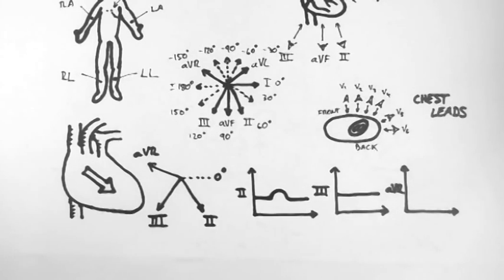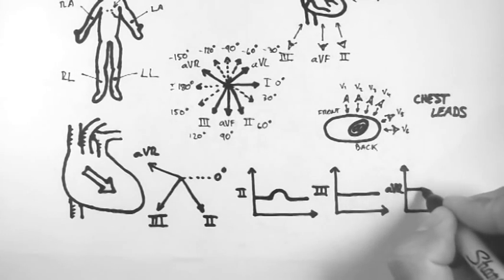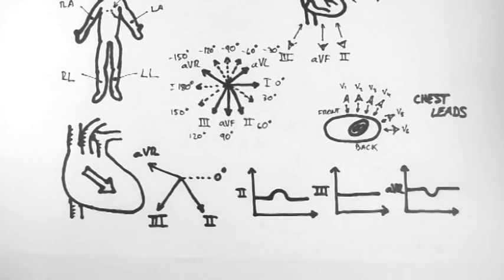And finally, because AVR is in the direction opposite to the direction of depolarisation, there is an inverted wave or a downward deflection.